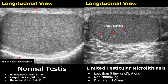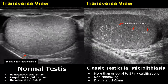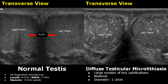Limited testicular microlithiasis consists of tiny calcifications inside the testis that are less than five in number. They don't have any shadowing and measure 1 to 3 millimeters in diameter. Classic testicular microlithiasis will have five or more tiny calcifications. In diffuse testicular microlithiasis you can see a large number of tiny calcifications in both the right and left testis.